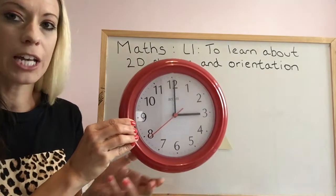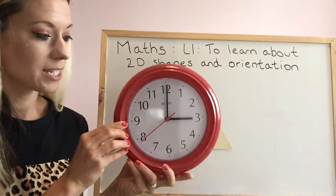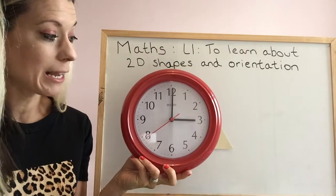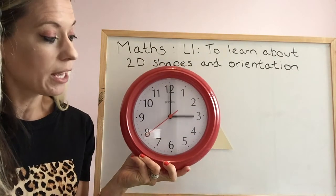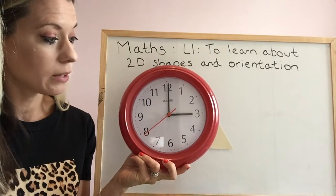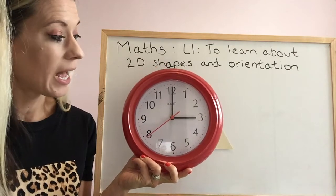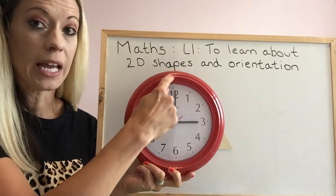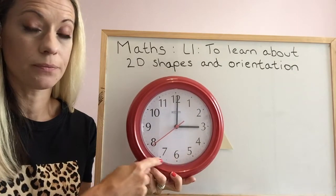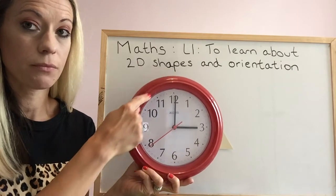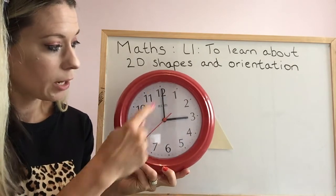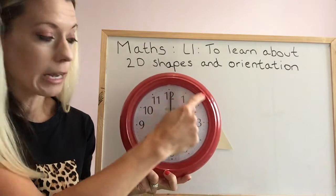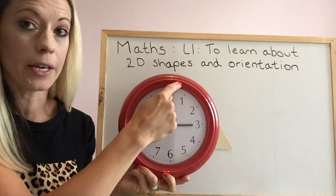Can you shout out what this object is? Good, it's a clock. Now if we were to look at this clock and talk about clockwise, we would be going in this direction and this rotation. We look at the numbers — they go in order in a clockwise way.